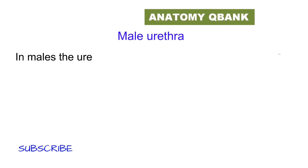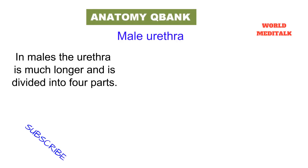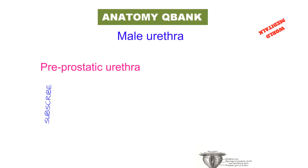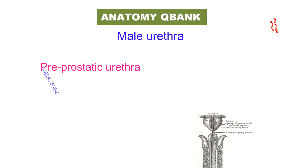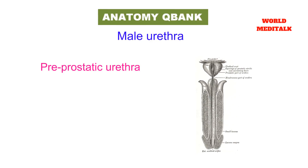The male urethra is much longer and is divided into four parts. The pre-prostatic urethra is extremely short, lying between the bladder and the prostate gland. It has a stellate lumen and is between 1 to 1.5 cm long. It is innervated by sympathetic noradrenergic fibers. As this region is composed of striated muscle bundles, they may contract and prevent retrograde ejaculation.